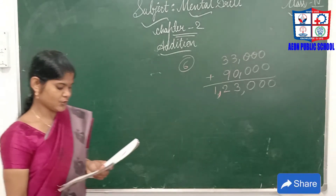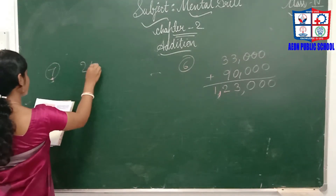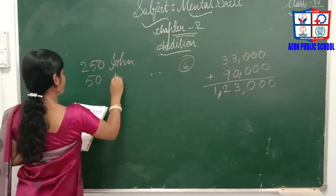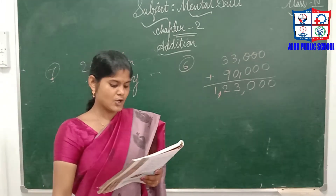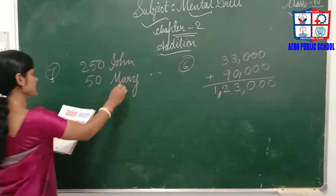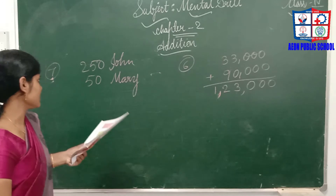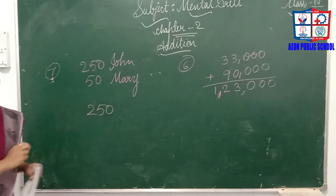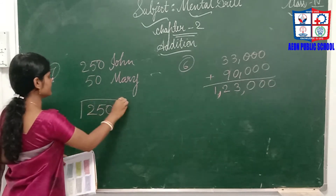Seventh: John has 250 stickers and Mary has 50 stickers. How many stickers does Mary need so that she has 50 more than John? She already has 50, and she needs 250 more so it becomes 300 — that is 50 more than John. So the answer is 250.